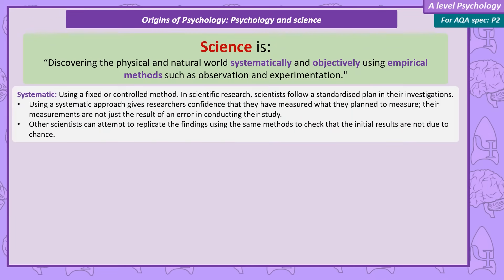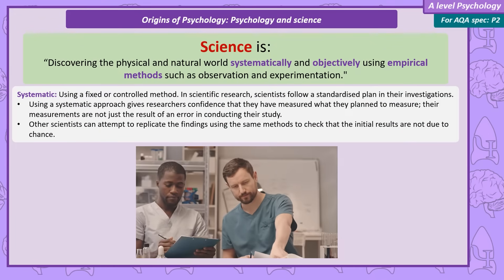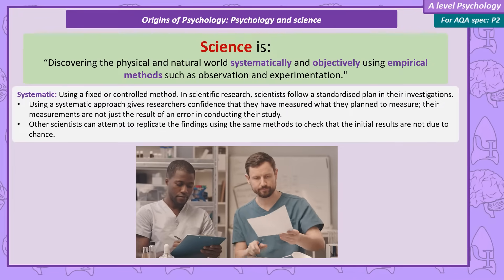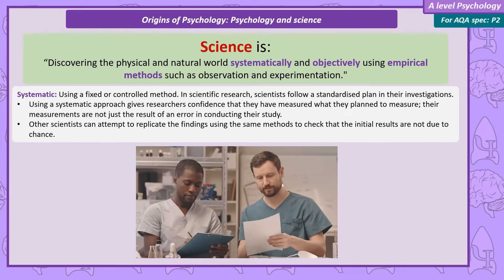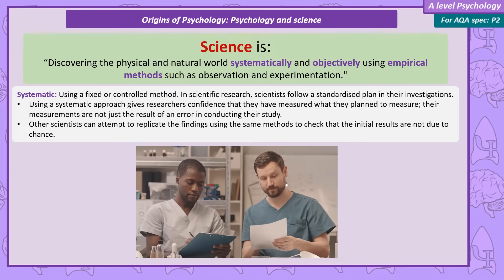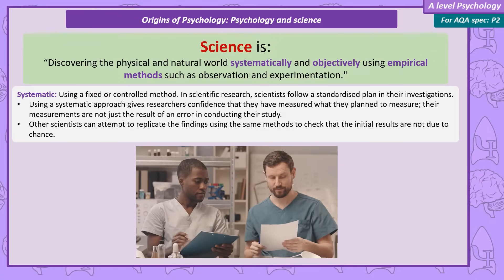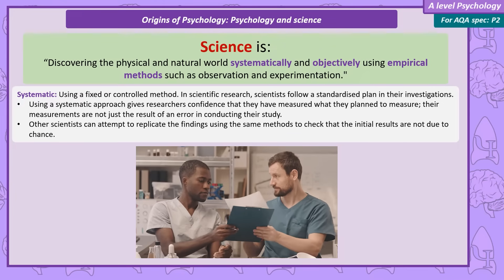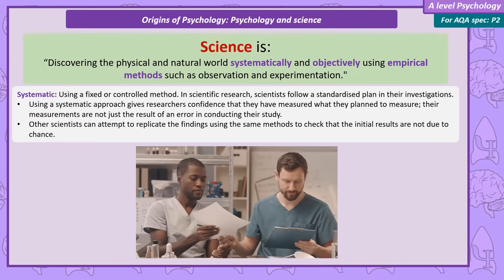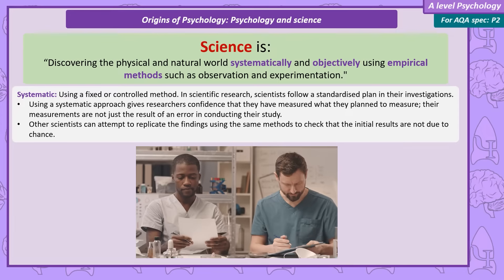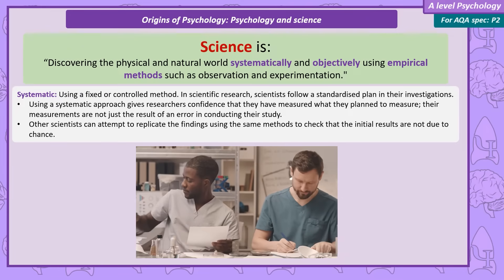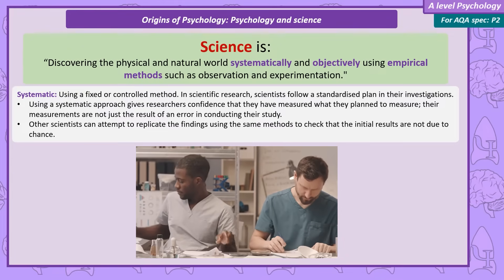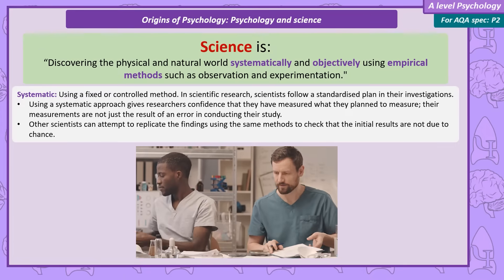Systematic means working according to a fixed or controlled method. Scientists have standardised plans, or systems, to their investigations. This helps researchers be confident that they've measured what they planned to measure — they haven't just made a mistake because of how they conducted their study. It also means other scientists can take the plan and attempt to replicate findings using the same methods, which is a check that the original results are not due to chance.